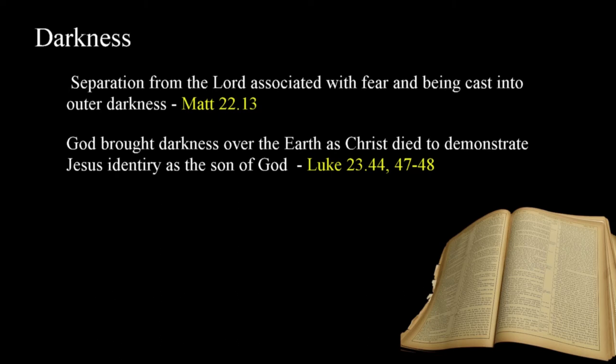John speaks of the world as being in darkness in his description of Christ in his gospel account. John describes Christ as a light that was rejected because the darkness comprehended it not in John 1:5. God sent his Son into the world to dispel this darkness so that we could know his will and thus be saved through obedience to him in 1 John 1:5-6. Punishment by God associates separation from the Lord with fear and being cast into outer darkness in Matthew 22:13. God brought darkness over the earth as Christ died on the cross in Luke 23:44.